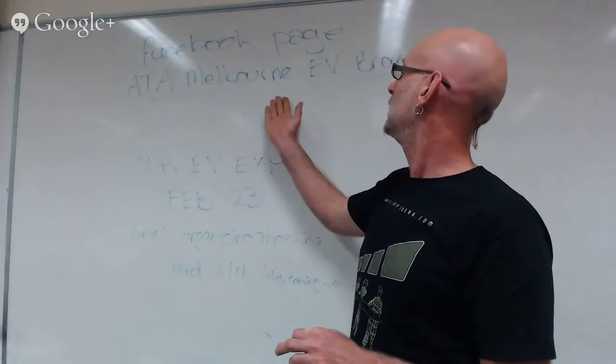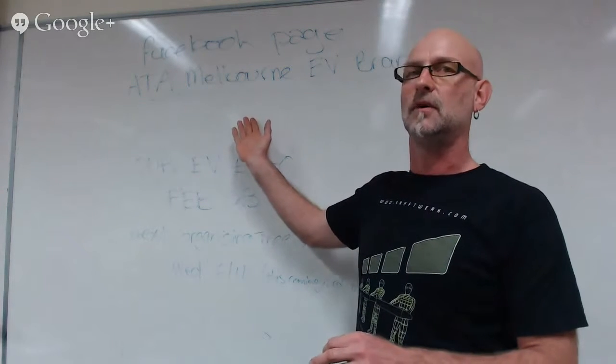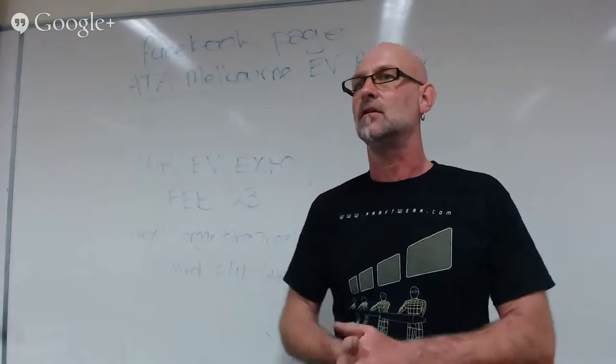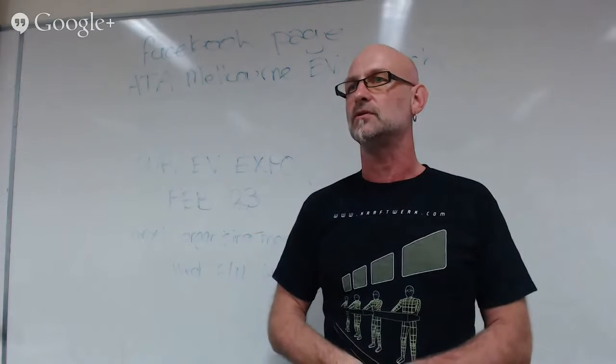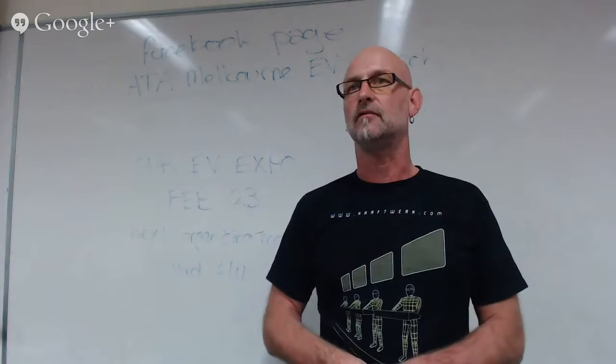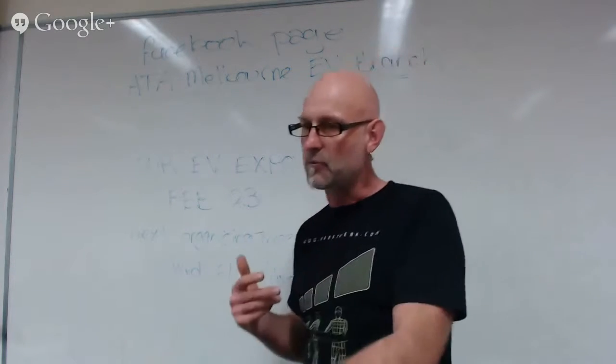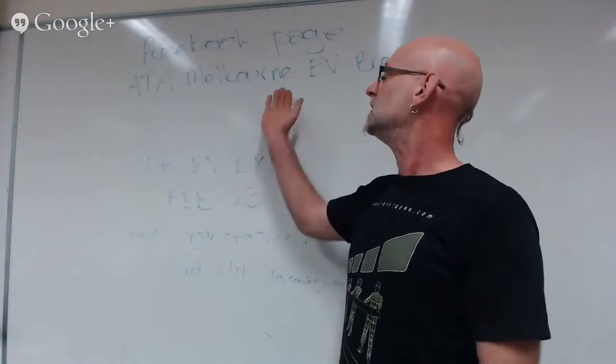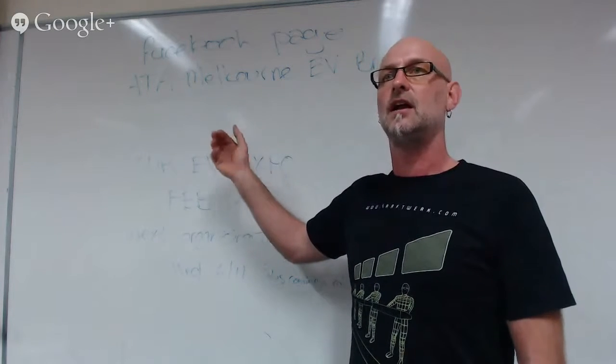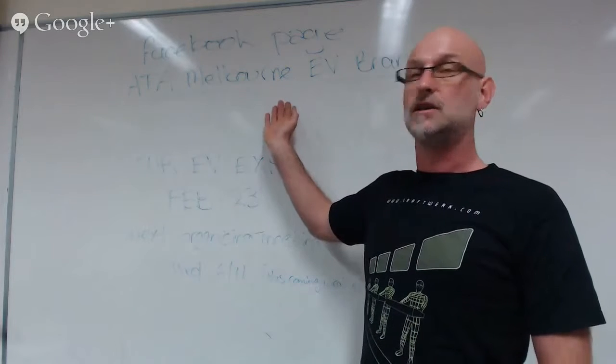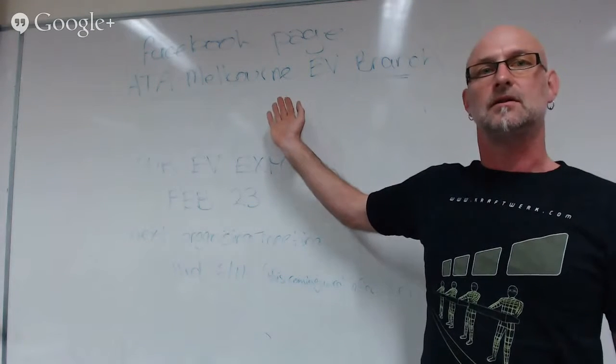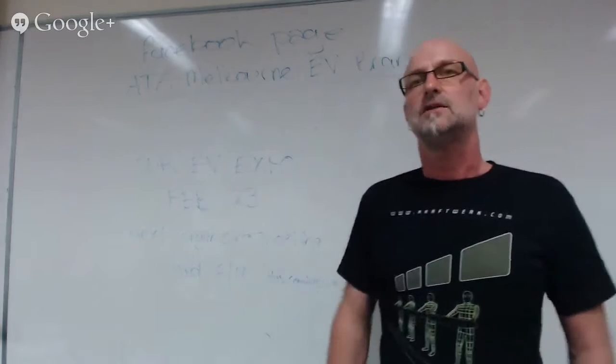The same problem occurs with the Melbourne branch as well. Events that are organized don't seem to be published ahead enough. We do have the ATA Melbourne EV branch Facebook page. Notice went up well ahead of the event on that page, and maybe in the future make sure that it goes out into emails as early as possible.